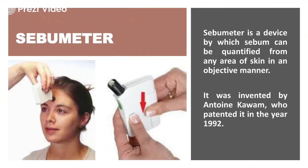So my dear friends, let us begin. The Sebiometer is basically a device with which we can measure the sebum. Sebum is the oily secretion from the sebaceous glands, and these glands start working when an individual reaches puberty. During that phase, there is excess sebum development. The Sebiometer quantifies the concentration of sebum, and this quantification can be done from any part of the skin in an objective manner. The device was invented by scientist Antoine Cavam, who patented it in the year 1992.